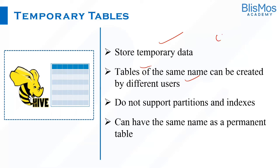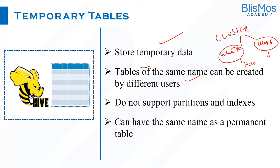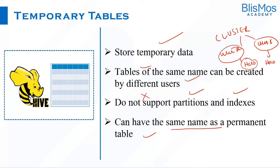With temporary tables, you can create tables of the same name by different users. For example, assuming you have a cluster with two users — user A and user B — if user A creates a table called 'hero,' user B can go ahead and create a temporary table called 'hero' in the same cluster. A temporary table can have the same name as an original table, and the same name can be used by different users, which is not supported in managed or external tables. However, temporary tables do not support partitioning and indexes.